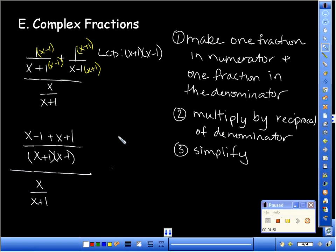So, my numerator becomes 2X over X plus one, X minus one. All divided by X over X plus one.